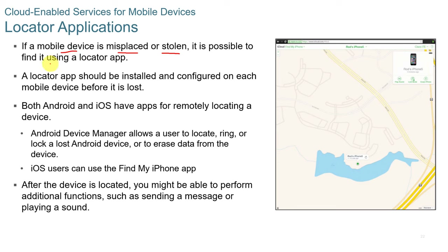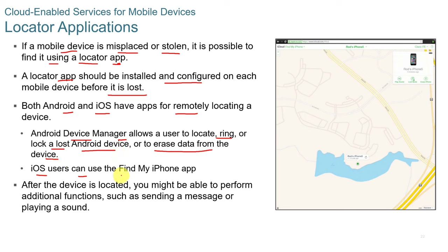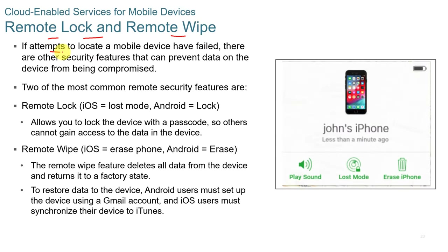If a mobile device is misplaced or stolen, it may be found using a locator app, which should be installed and configured before the device is lost. Android Device Manager allows a user to locate, ring, lock, or erase data from a lost Android device. iOS users can use the Find My iPhone app to do the same. After a device is located, you may be able to send a message, play a sound, or provide the information to local law enforcement to help recover the device.